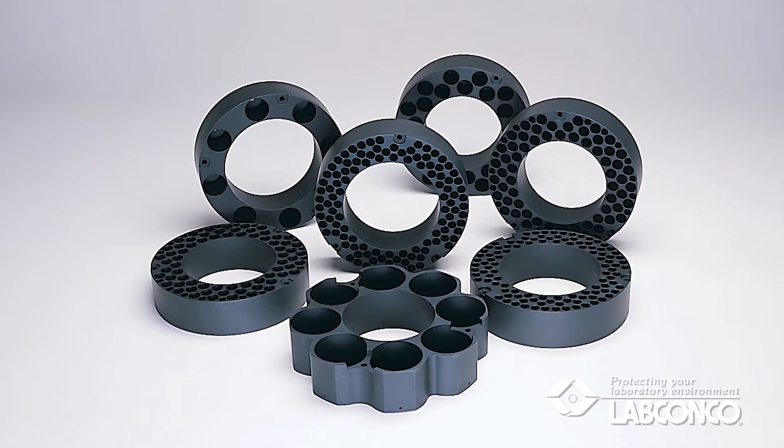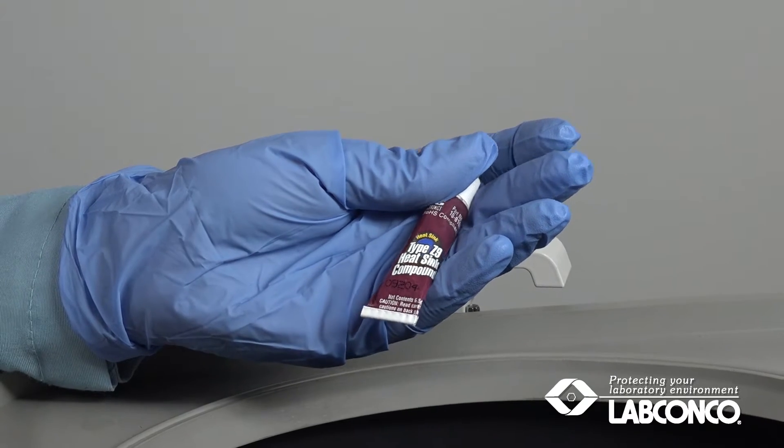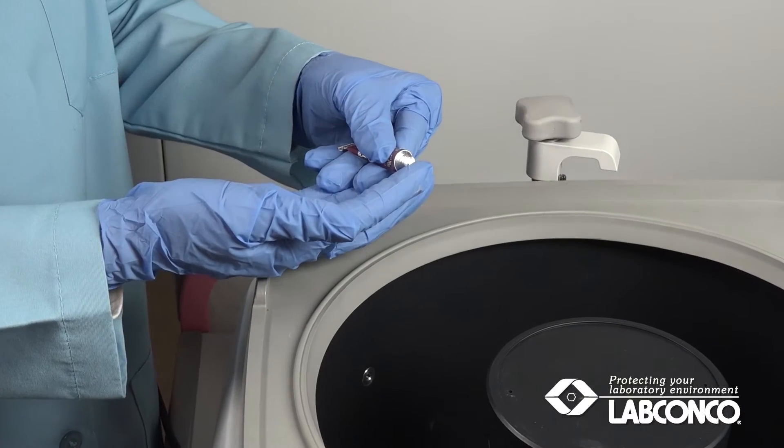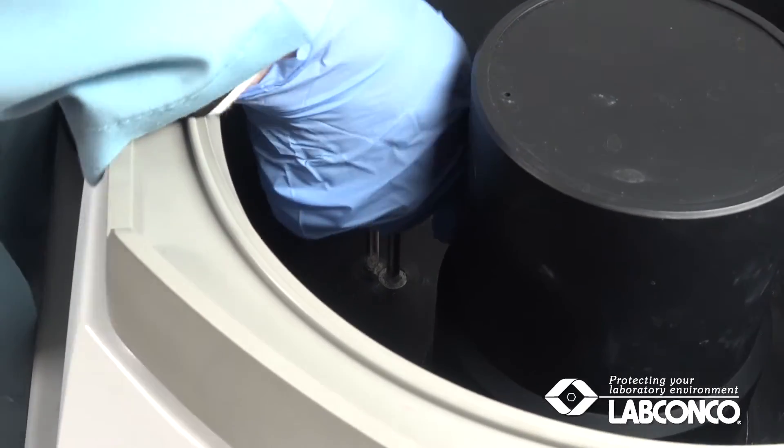Here's how to install a RapidVap concentrator sample block. Apply a small amount of the heat transfer grease supplied with the RapidVap to the end of the temperature sensor probe that extends from the bottom of the chamber.